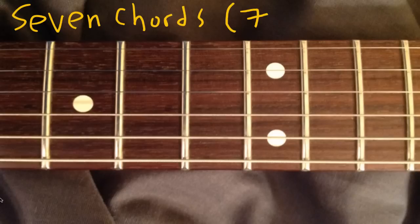So the first one is just seven, and the full name for that is actually dominant seven. But when you're looking at a chord chart, you just see seven. The next one is major seven. You can either do it with a triangle, which means major seven, or you can write M-A-J seven.